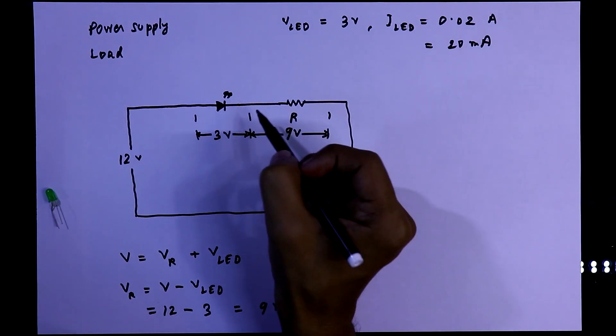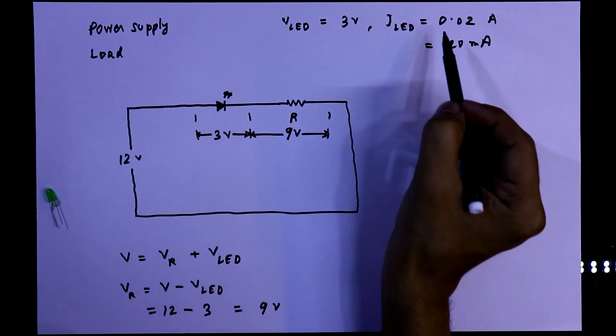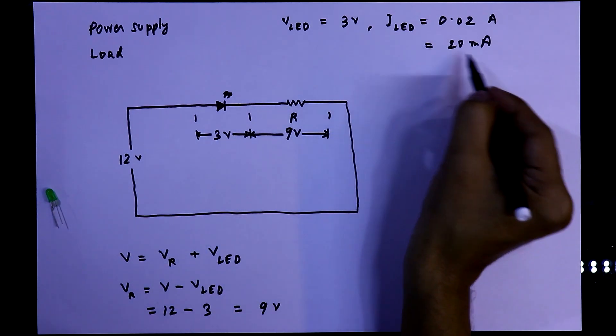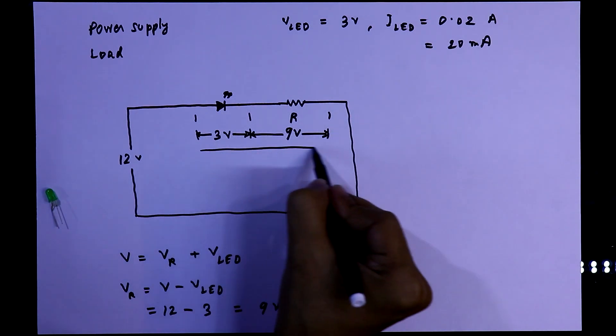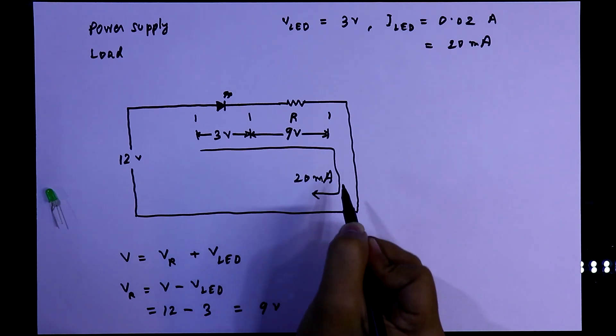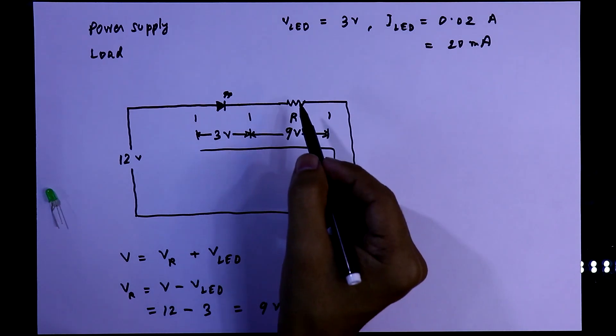As we have to light this LED, the current through the LED must be 20mA. 20mA is 0.02A. Now we can find out the resistor value.